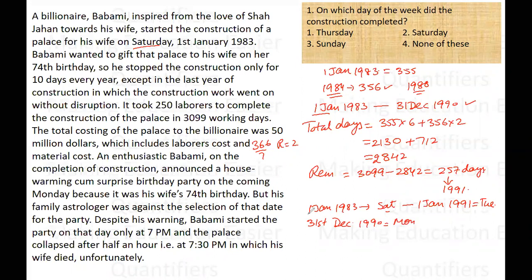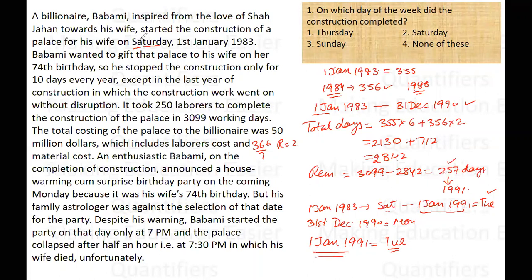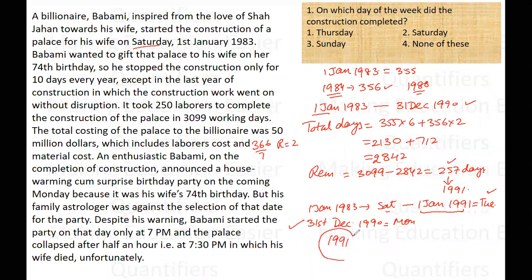31st December 1990 is Monday. I take this as the reference date because we need to count all 257 remaining days in 1991. Using this reference, we take 257 days into 1991. Dividing 257 by 7, the quotient is 36 and the remainder is 5. That means 36 complete weeks and 5 odd days.